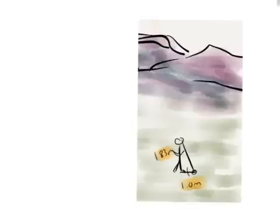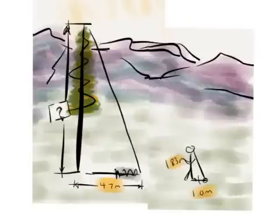If we, however, look at our own shadow, we might find a clue. These are similar triangles. Therefore, their sides are in proportion.